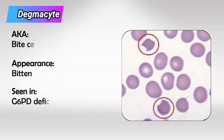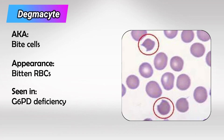Next we have degmacytes, which are commonly referred to as bite cells. These are highly characteristic of the disease G6PD deficiency.